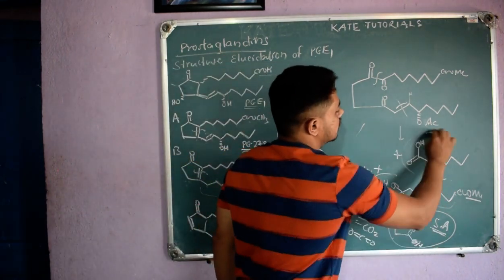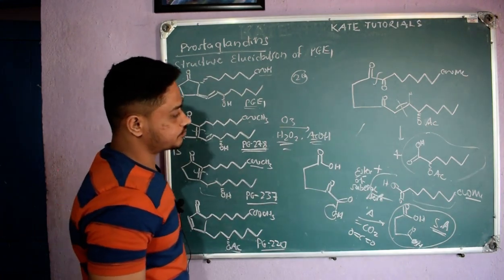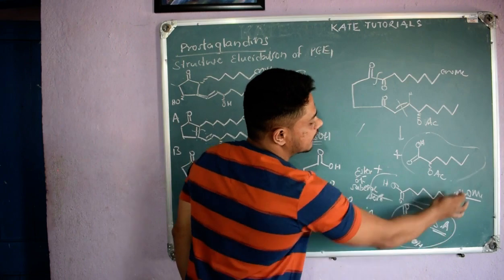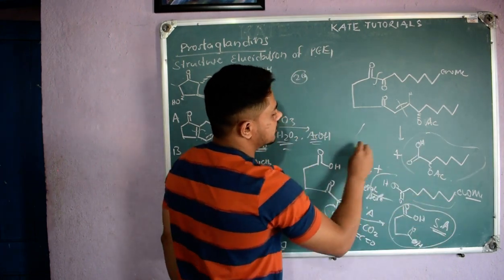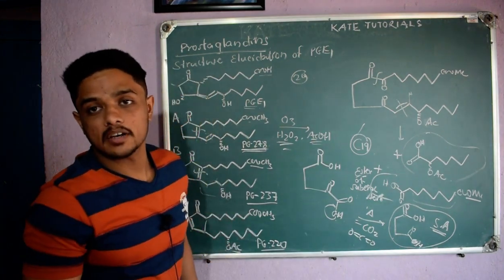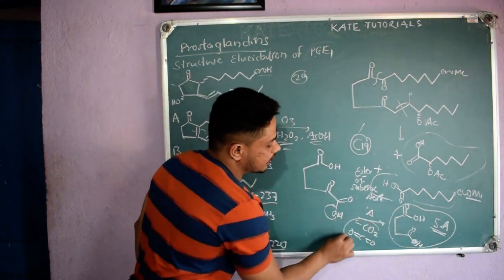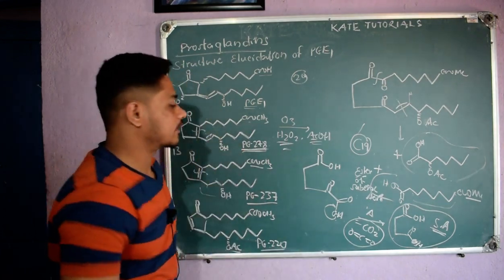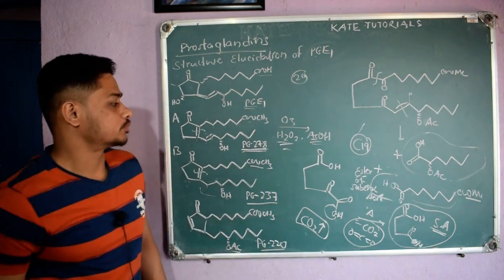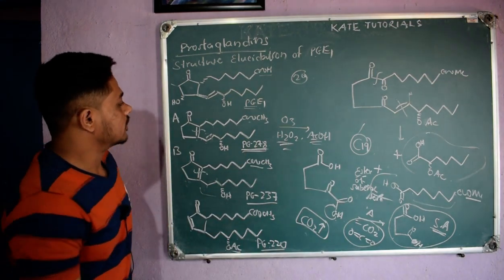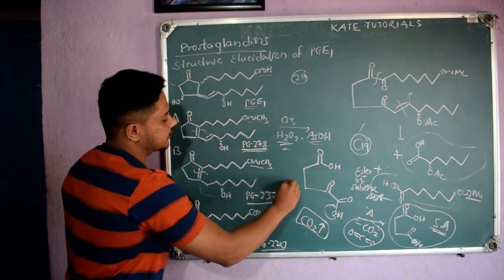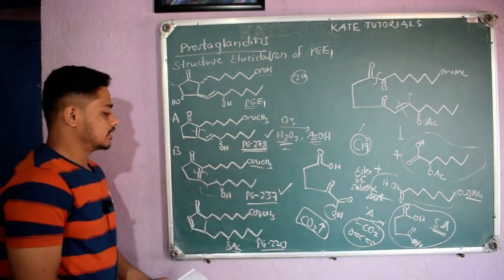After studying all these things, they counted the number of carbons in each product. When they added them together they got only 19 carbons — they missed one carbon. That one carbon went out as carbon dioxide, which evolved as a gas to the atmosphere. This is what happens when we do ozonolysis of PG278.